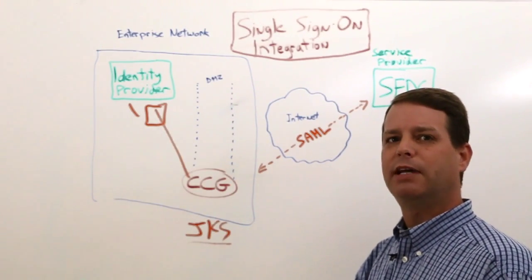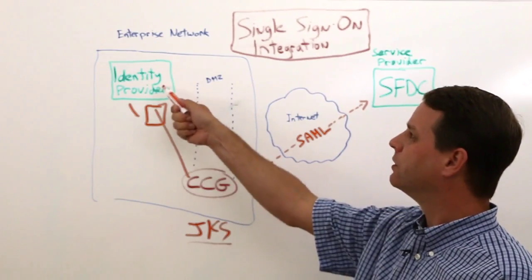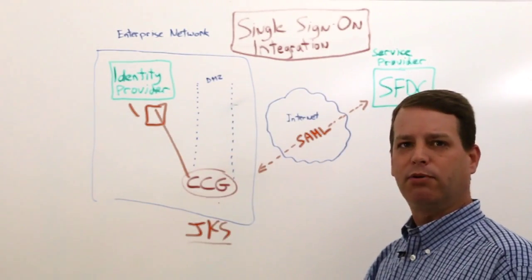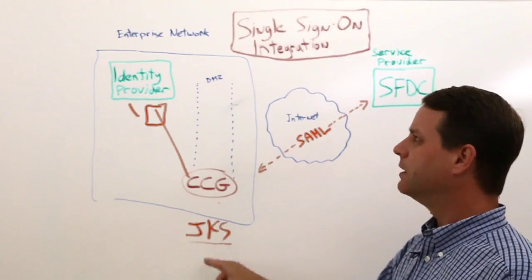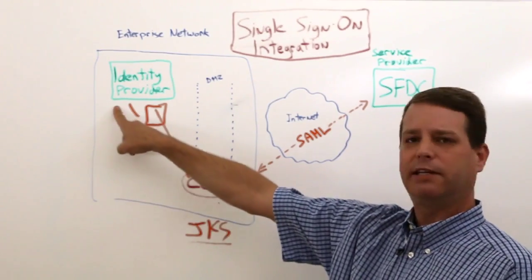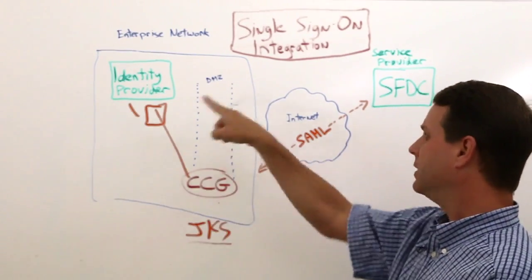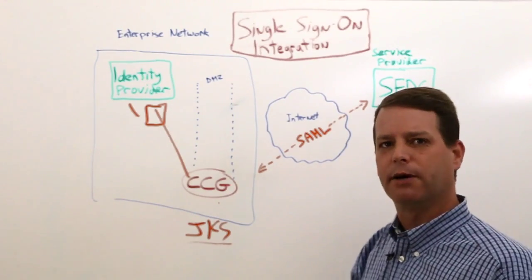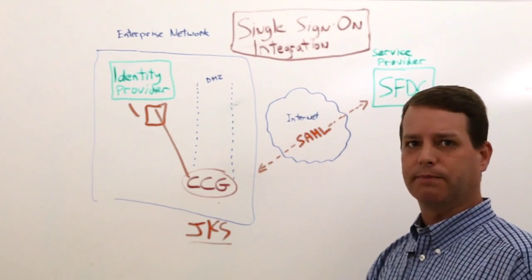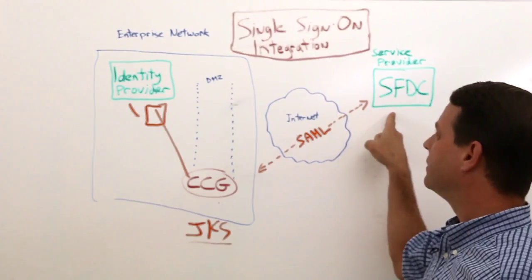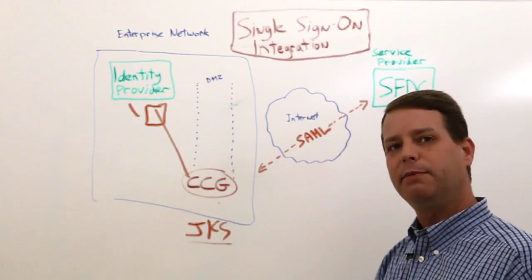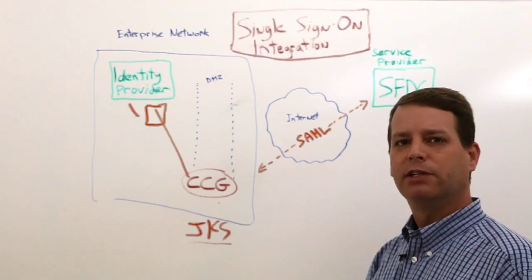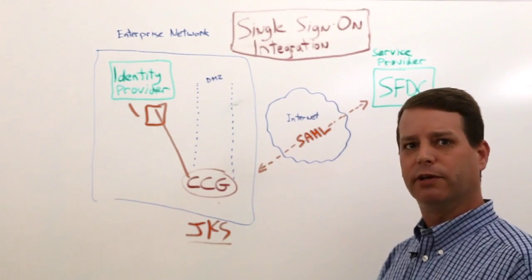The important part is to capture that user. I don't want to let that user go directly back to Salesforce — it's important to have them come back through us. So the process is: get your keys ready, give the public key to the identity provider, and give the public key to the service provider. I need the endpoints at both Salesforce and the identity provider to resolve back to the CypherCloud Gateway.